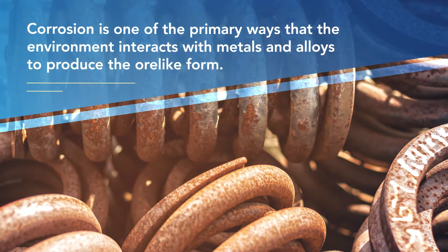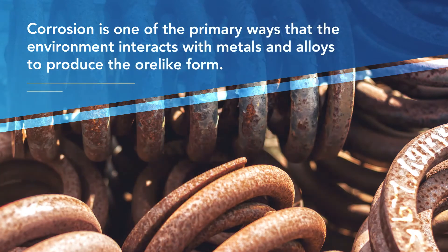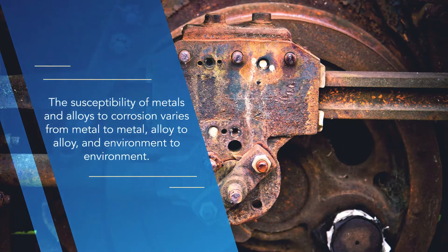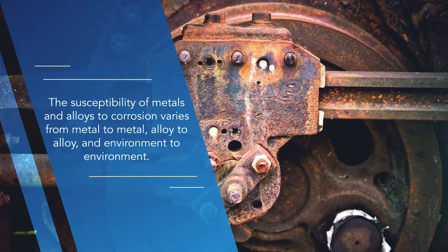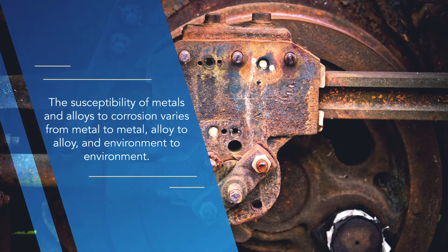Corrosion is one of the primary ways that the environment interacts with metals and alloys to produce the ore-like form. Many environments can be corrosive to metals and alloys, but the susceptibility to corrosion varies from metal to metal, alloy to alloy, and environment to environment.